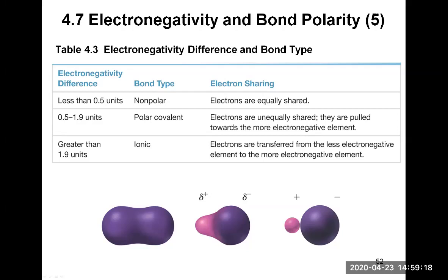If the electronegativity difference is greater than 1.9 — so from 2.0 and above — the bond is classified as ionic. This means electrons are transferred from the less electronegative element to the more electronegative element. An ionic bond consists of ions: a cation and an anion. The electron fully leaves one atom to join the other, resulting in a complete transfer and forming oppositely charged ions that are strongly attracted to each other.